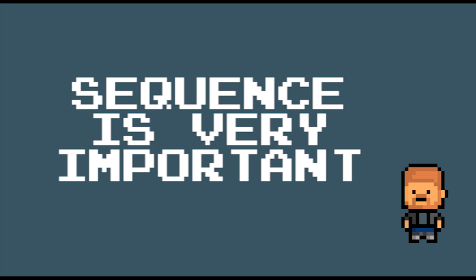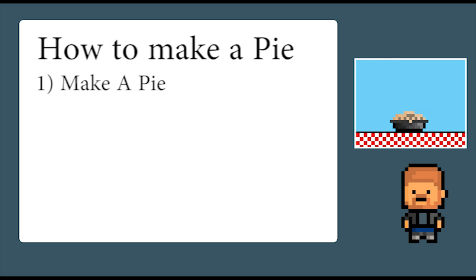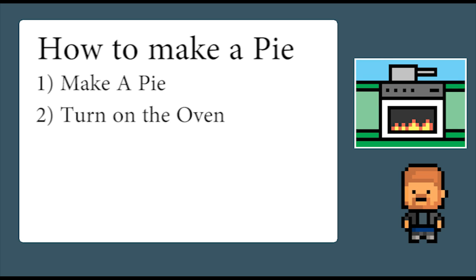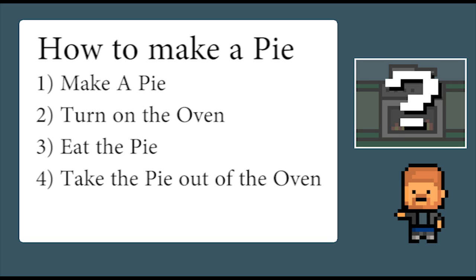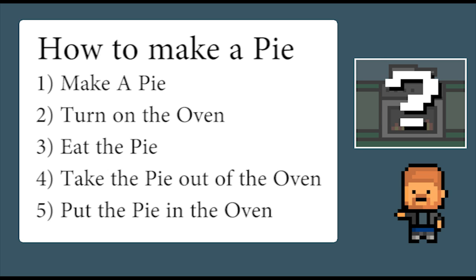Sequencing is super important in life, not just in computer programming. Take this example — it's a bit extreme, but you'll get the point. 1. Make a pie. 2. Turn on the oven. 3. Eat the pie. 4. Take the pie out of the oven. 5. Put the pie in the oven. Depending on the type of pie you are making, this could be really bad for you. So sequence is super important sometimes.